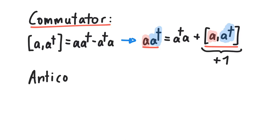This reasoning can also be applied to anti-commutators. The anti-commutator of two expressions, x and y, is defined as xy plus yx.